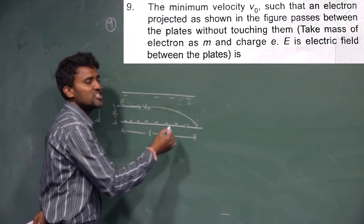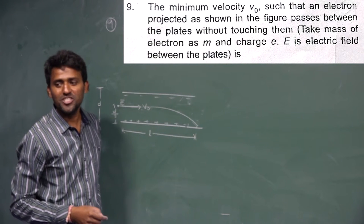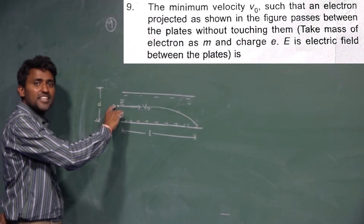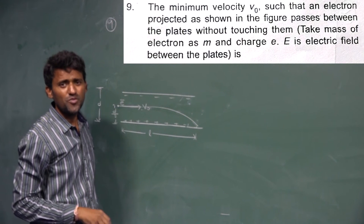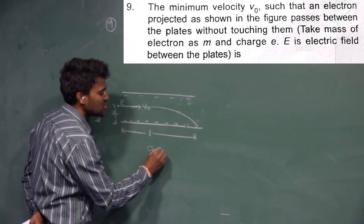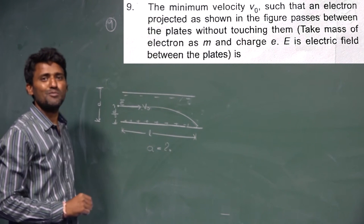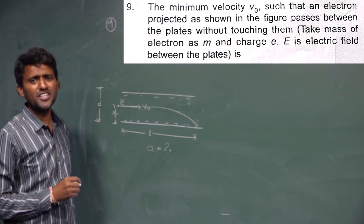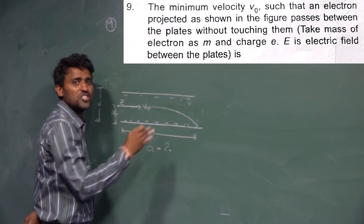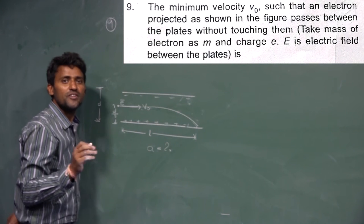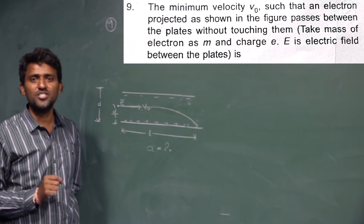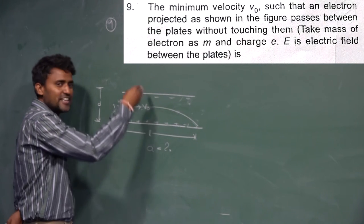It will cover a horizontal distance of L and a vertical distance of D/2, as given. Now, what is the acceleration? Along the horizontal direction, acceleration is zero because the object maintains uniform velocity. It is accelerating only in the downward direction.